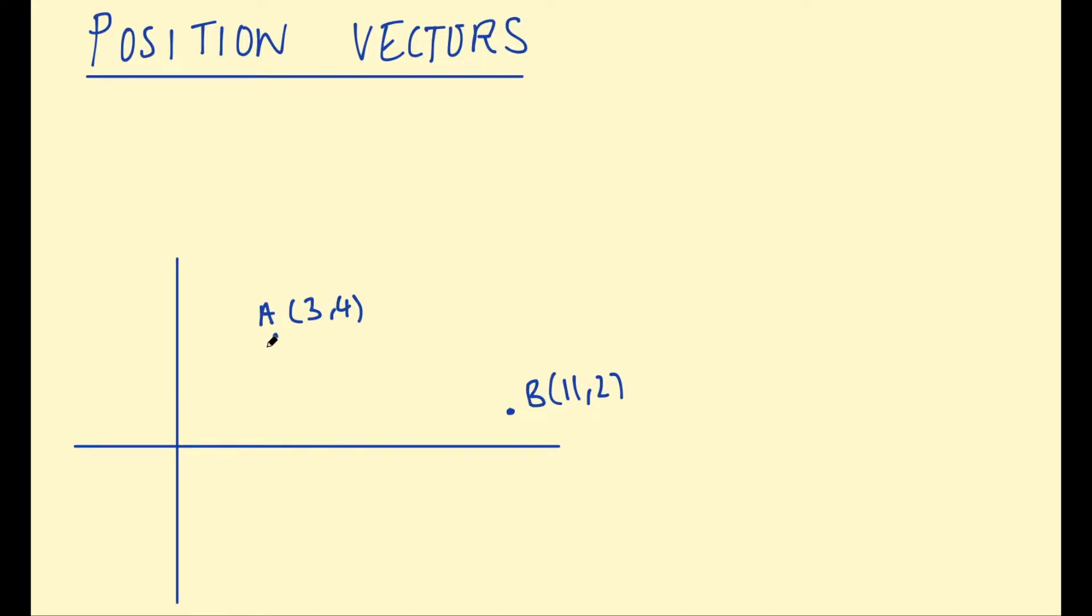Okay, so firstly what are position vectors? Well, if we have a point such as this one A which is at (3, 4) on our two-dimensional plane, then the position vector is simply the vector from the origin at (0, 0) to that point. So it's a vector representing the position of that point. It's pretty simple.